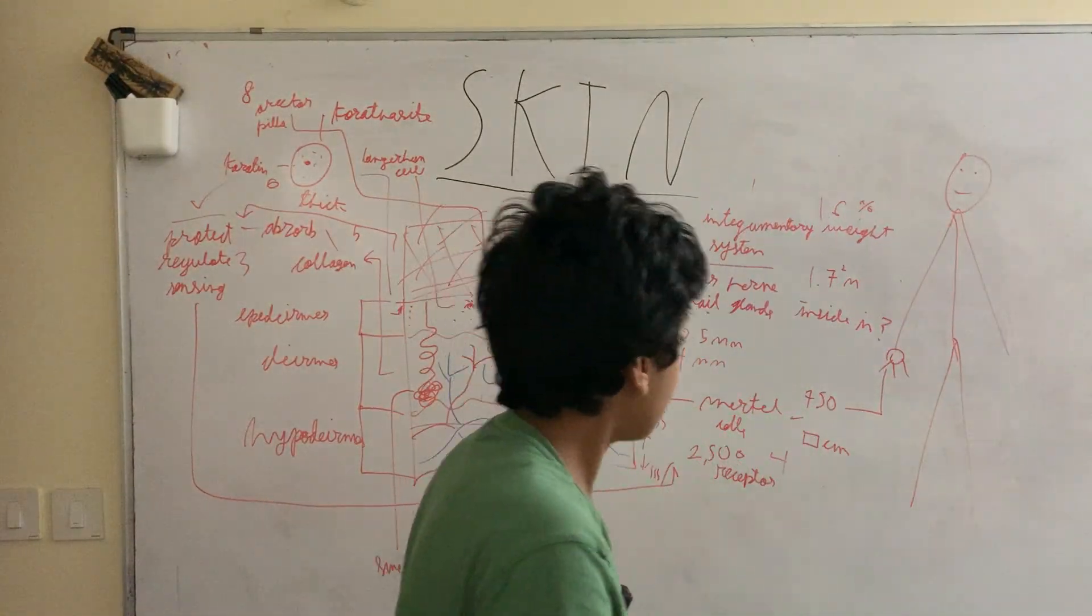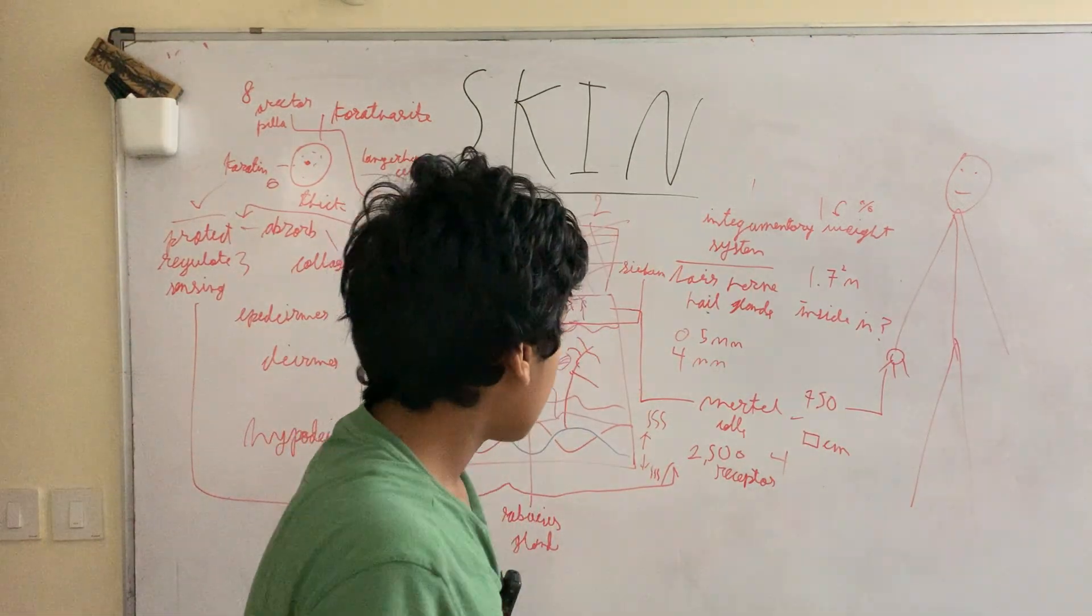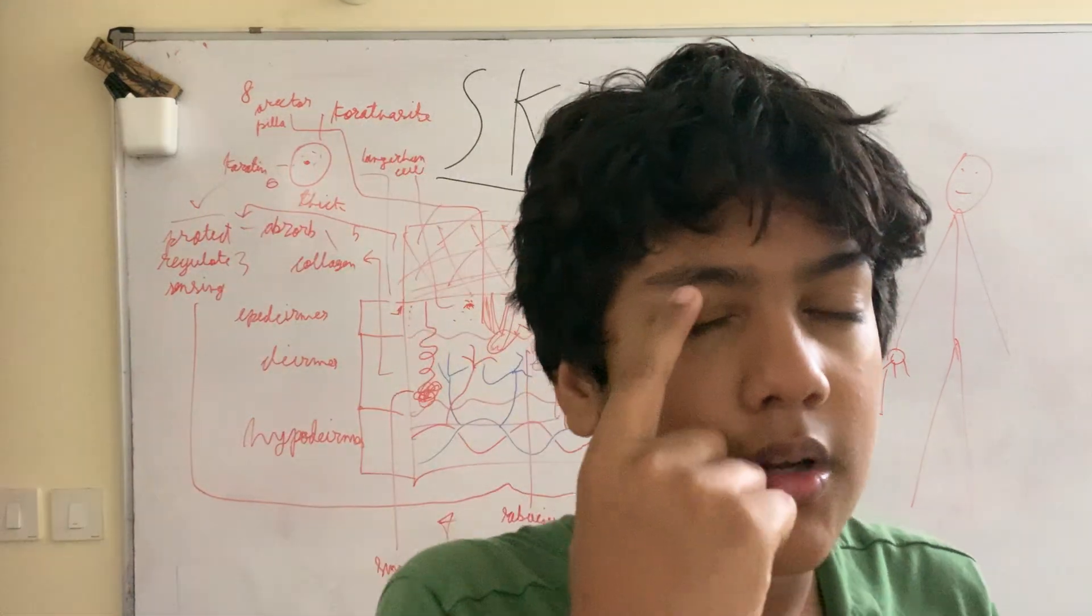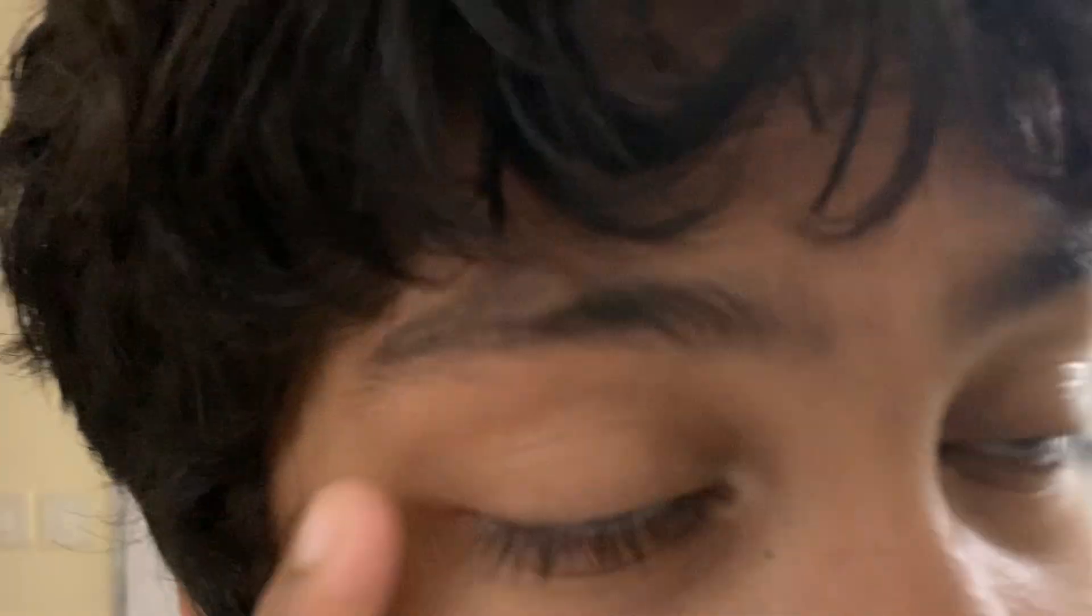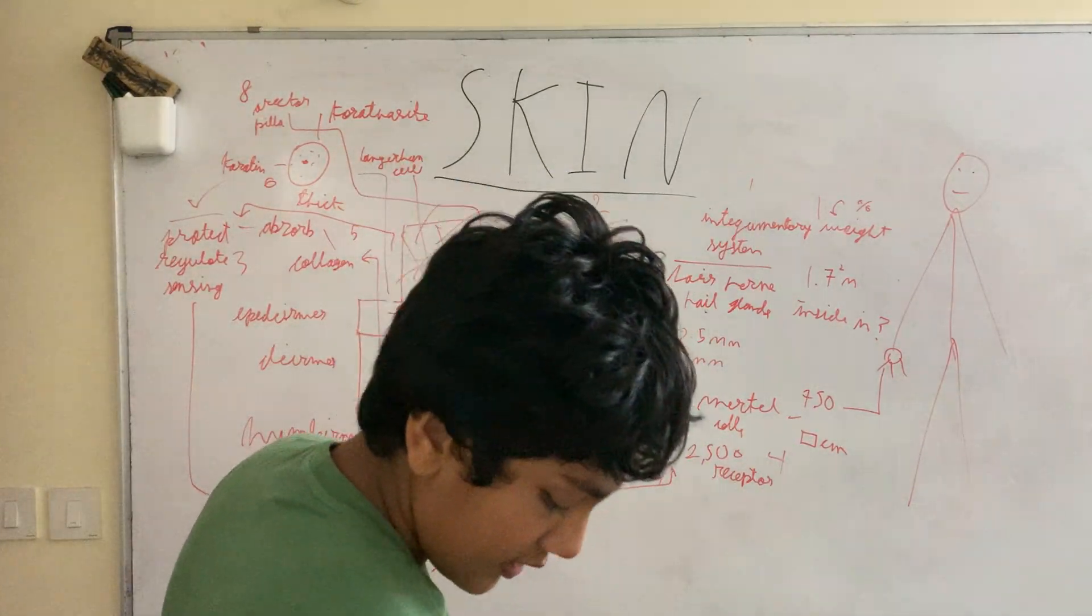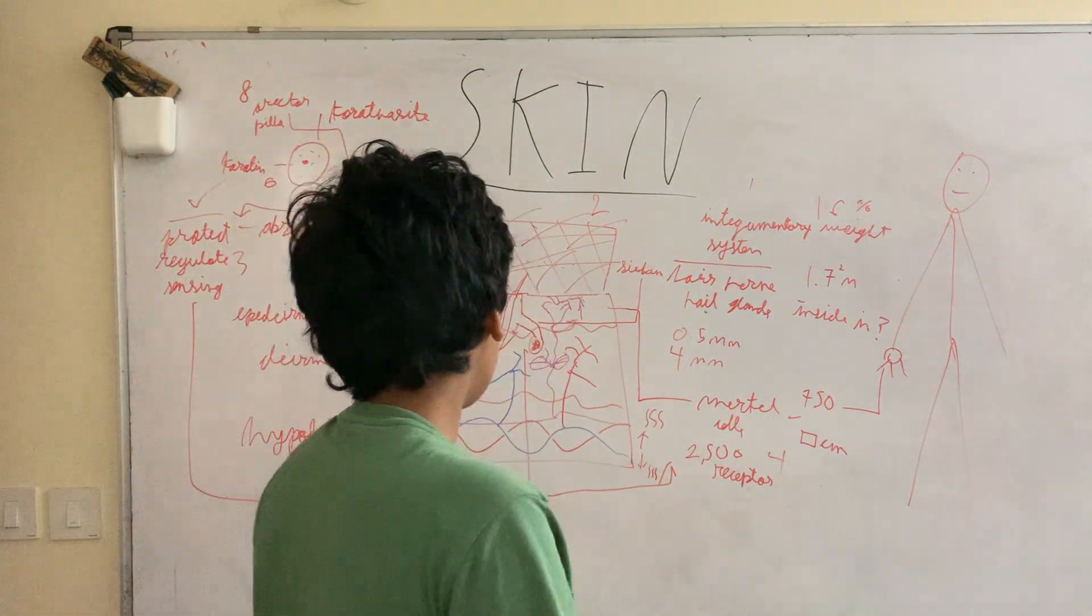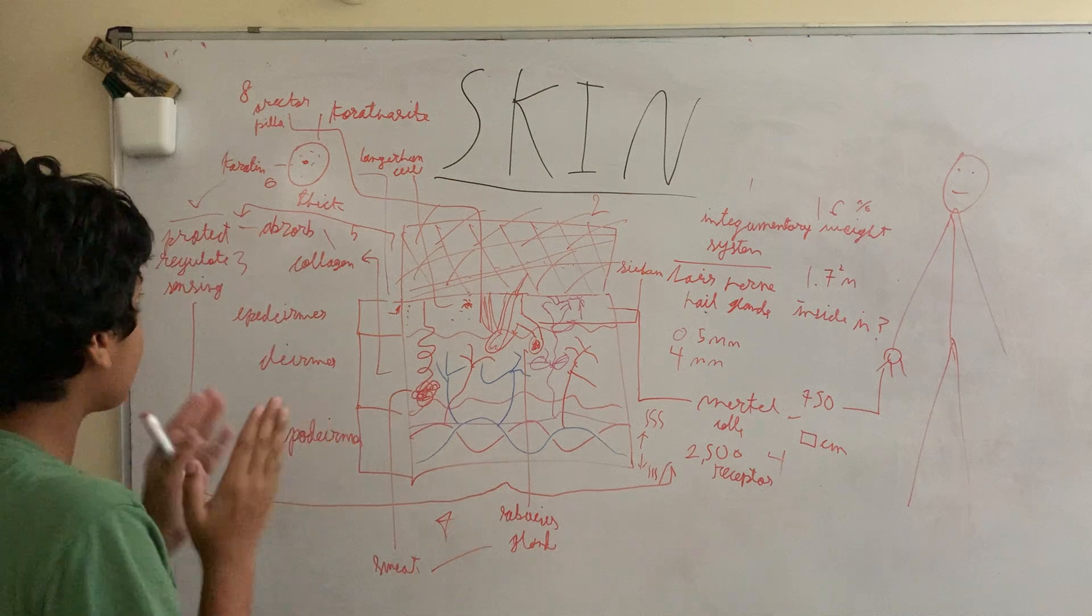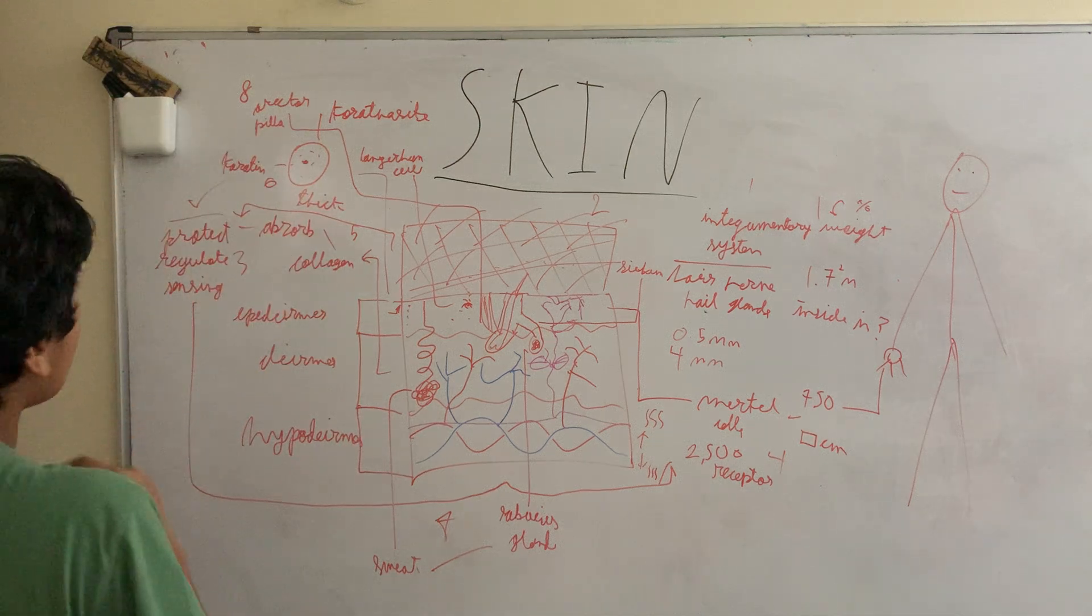As we also know, the skin can be thick or thin. The thinnest, like our eyelids, are as thin as 0.5 millimeters. But with our feet, the skin can grow up to 4 millimeters in thickness.